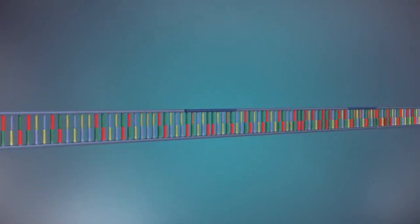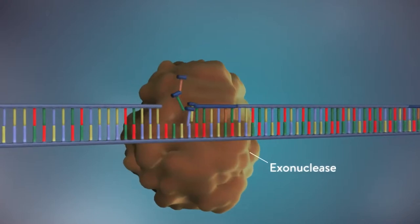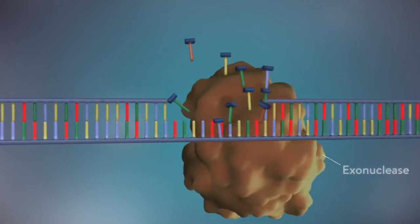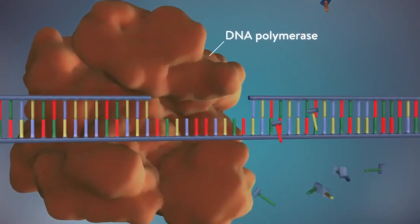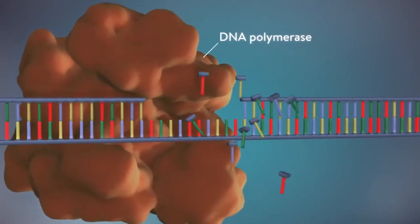Once the new DNA has been made, the enzyme exonuclease removes all the RNA primers from both strands of DNA. Another DNA polymerase enzyme then fills in the gaps that are left behind with DNA.